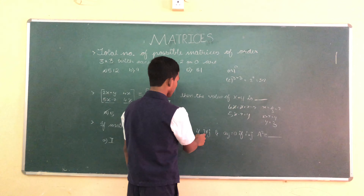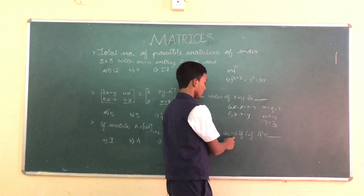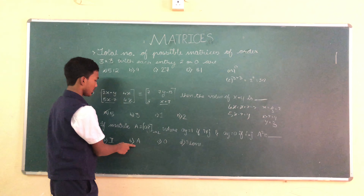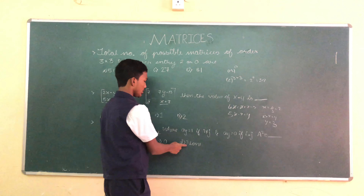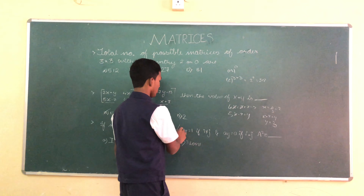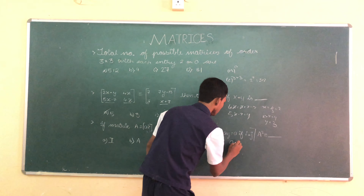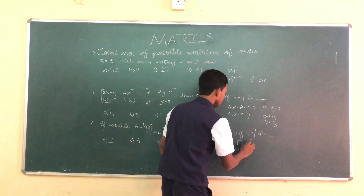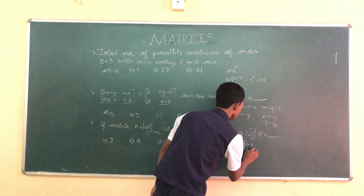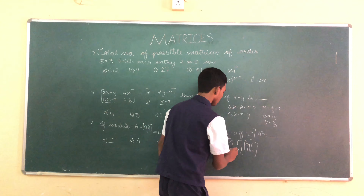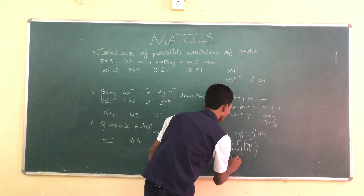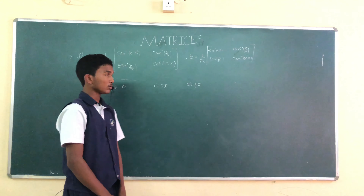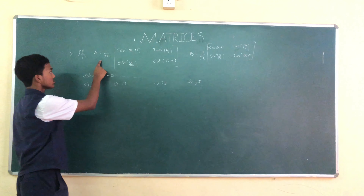Next question: if matrix A = [aij] of order 2×2, where aij = 1 if i ≠ j and aij = 0 if i = j, then A² equals dash. Options: A: I, B: A, C: 0, D: none. From the given conditions, the matrix is A = [0,1; 1,0]. Squaring this: [0,1; 1,0] × [0,1; 1,0] = [1,0; 0,1], which is the identity matrix. So the correct option is option A, I.